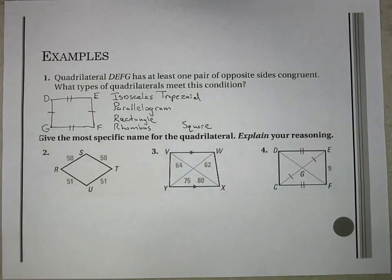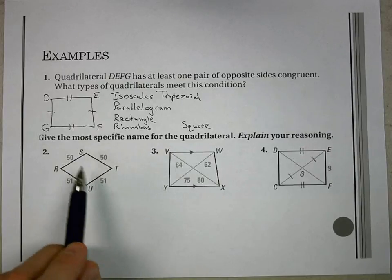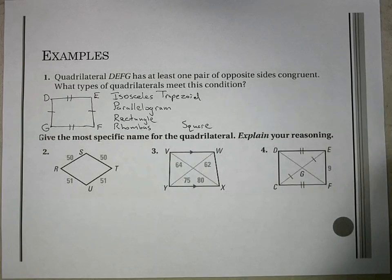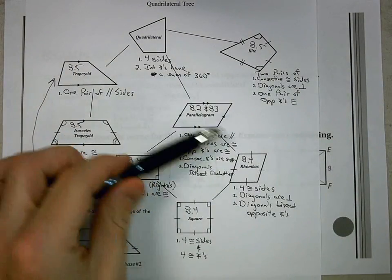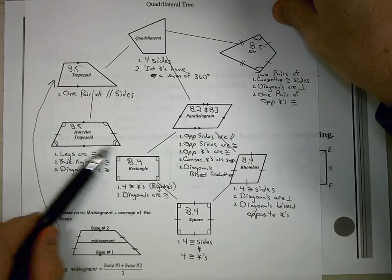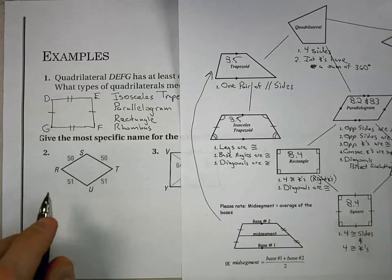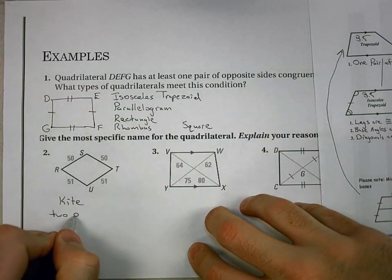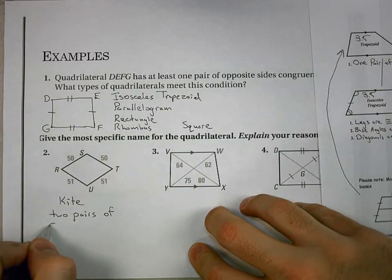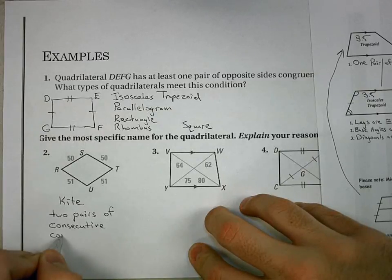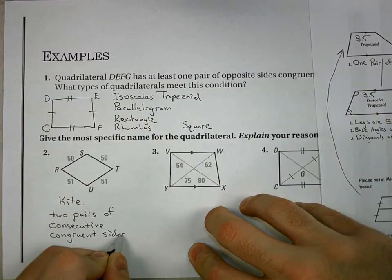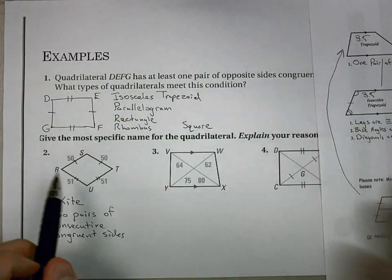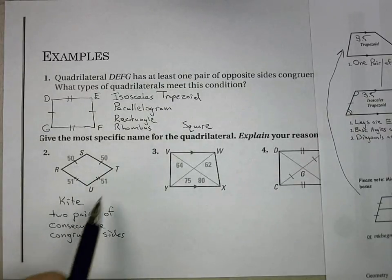For the next example, we need the most specific name. With sides measuring 50, 50, 51, 51, opposite sides are not equal, so a parallelogram and everything below it is eliminated. A kite fits because we have two pairs of consecutive congruent sides: 50 and 50 on one pair, 51 and 51 on the other. If both pairs were 50 we could call it a rhombus, but they're not — so we call it a kite.